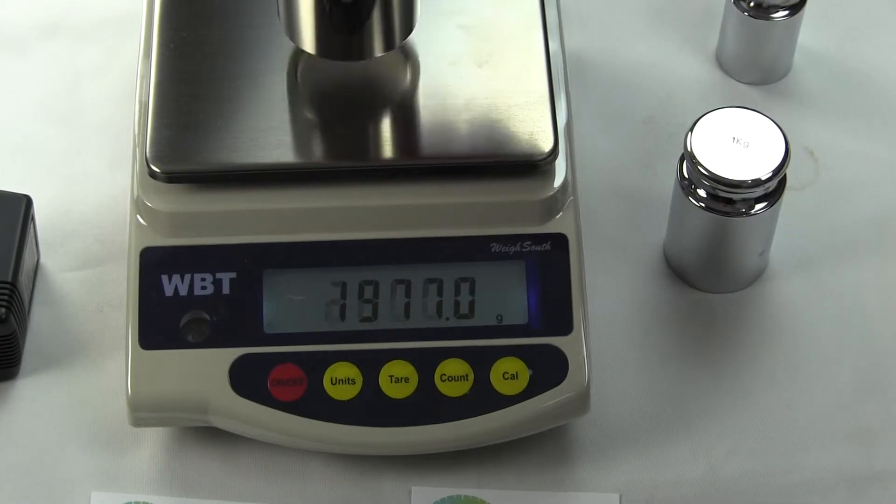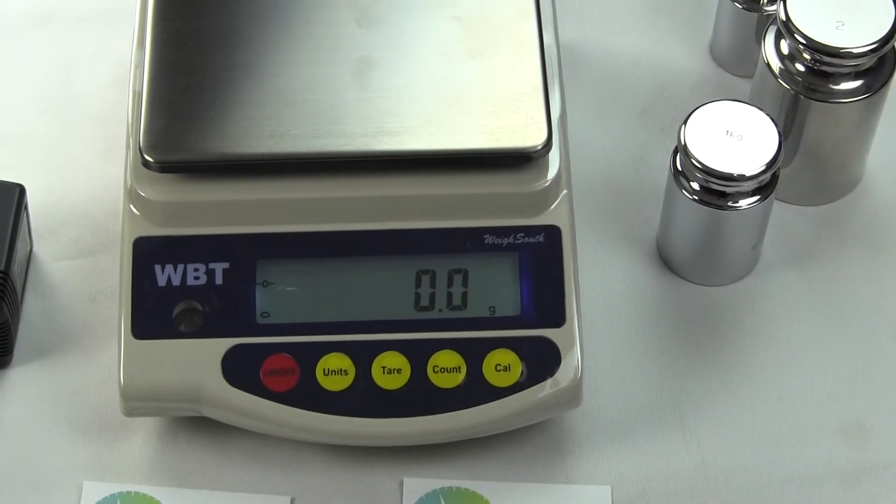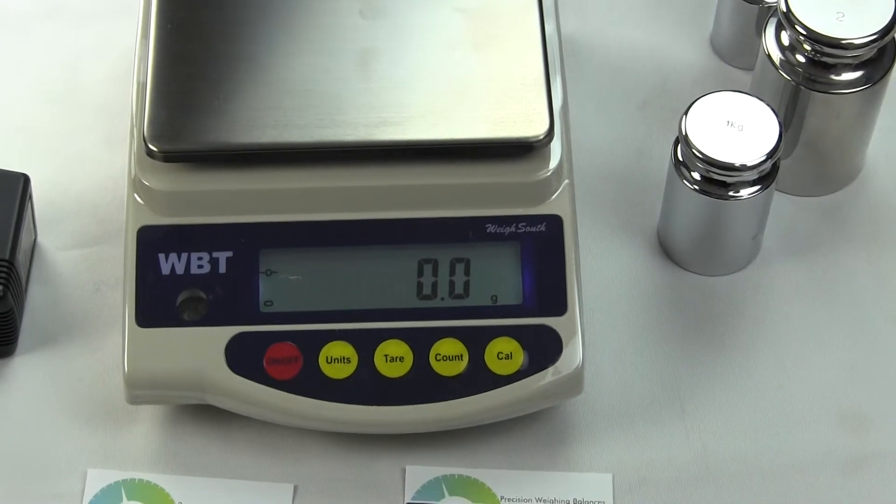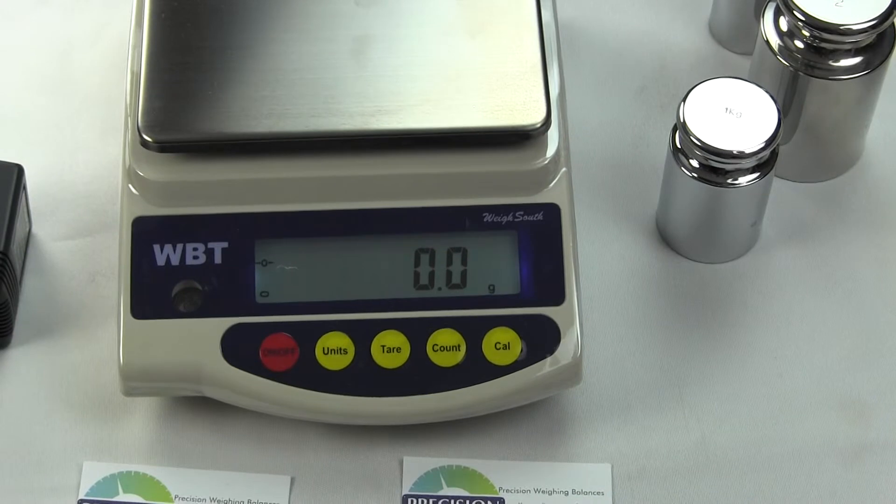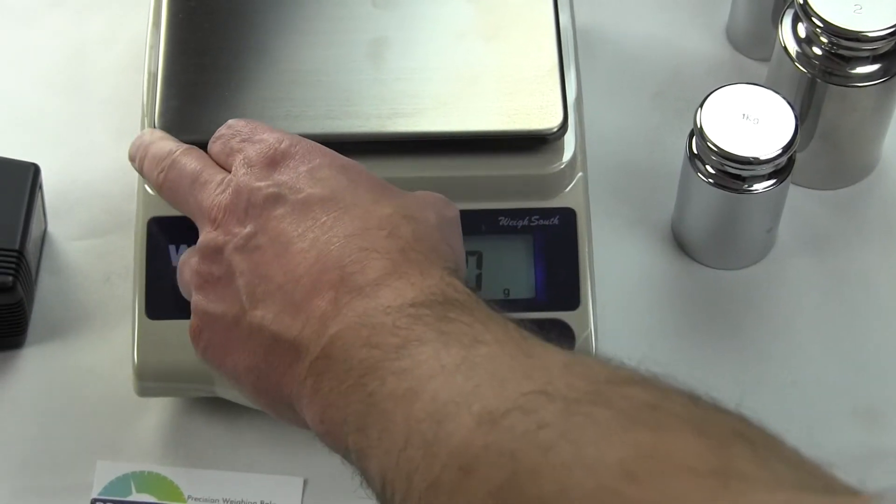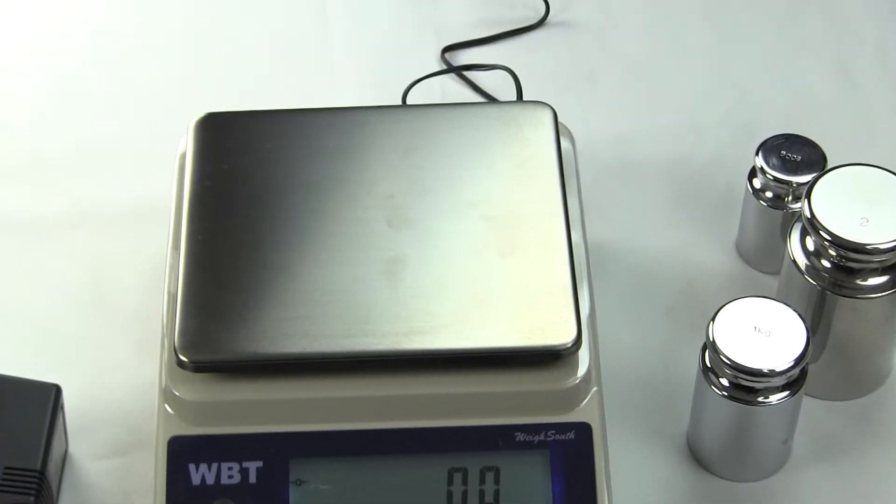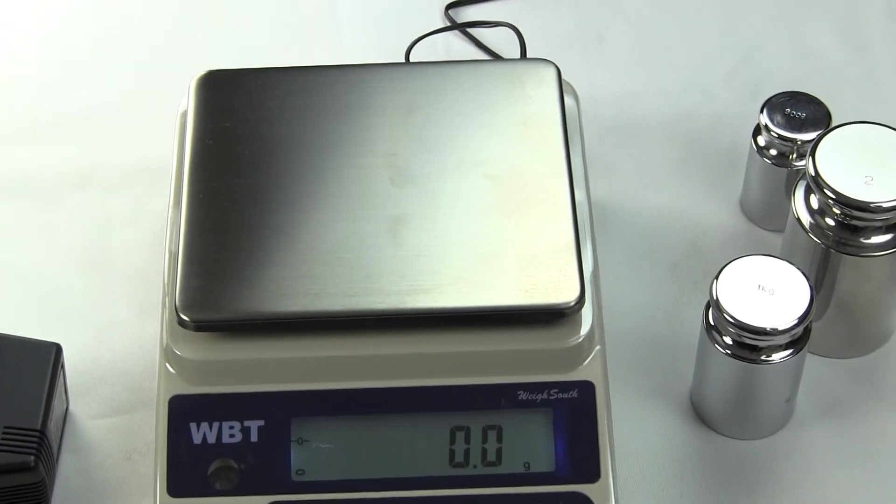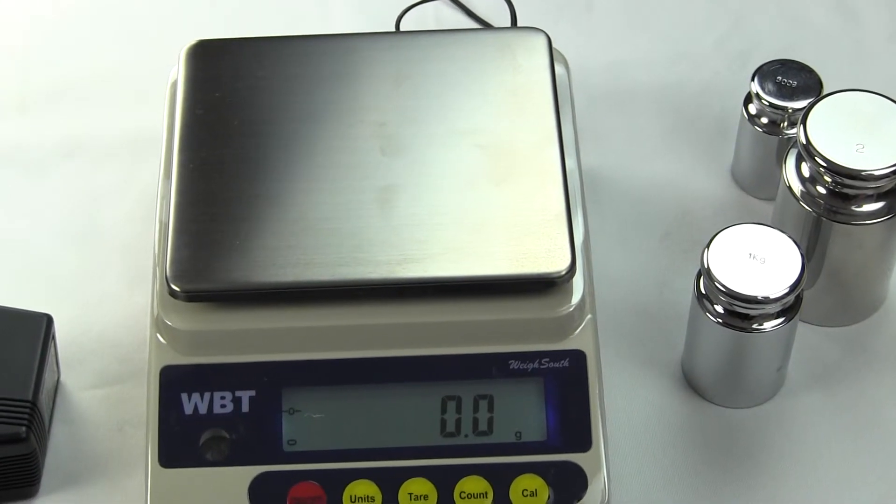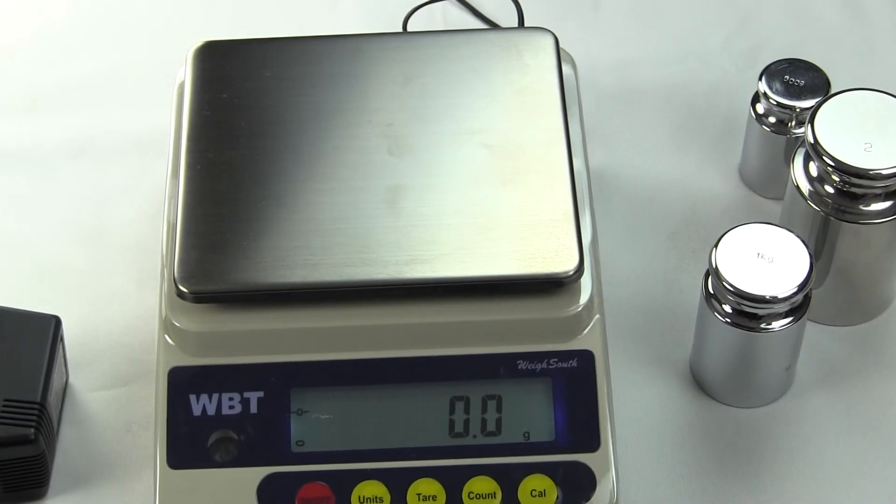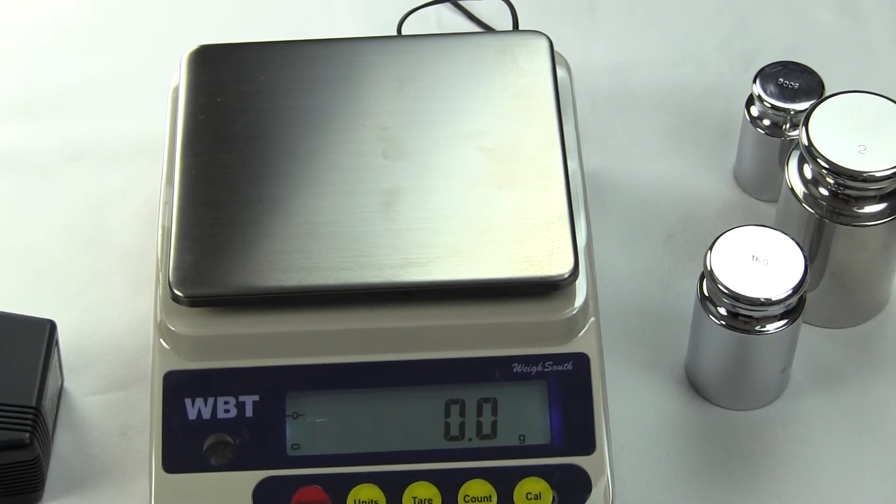This is our demonstration on the WBT series. I just want to explain one more thing: the 5000 gram unit has a platform size that is seven by six inches and it's a rectangular platform. The other units, the WBT 602 has a five inch diameter so it's round, and the WBT 100 has a three inch diameter platform. But they all use the same footprint.